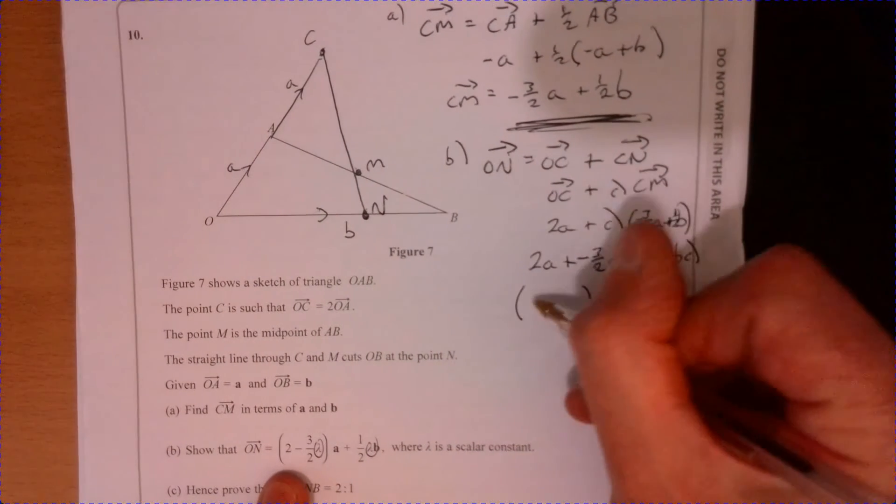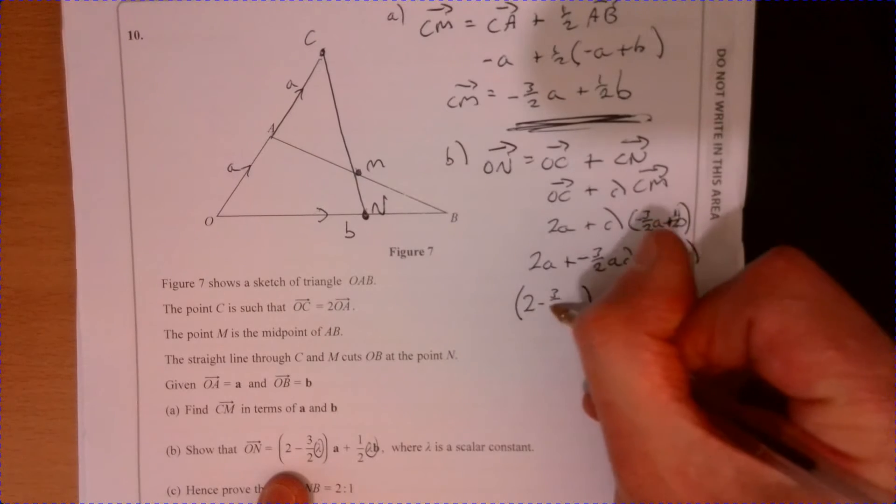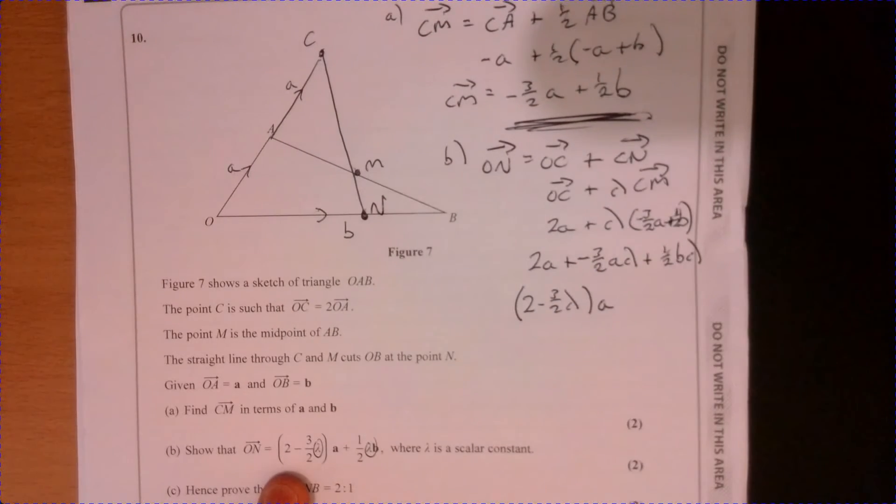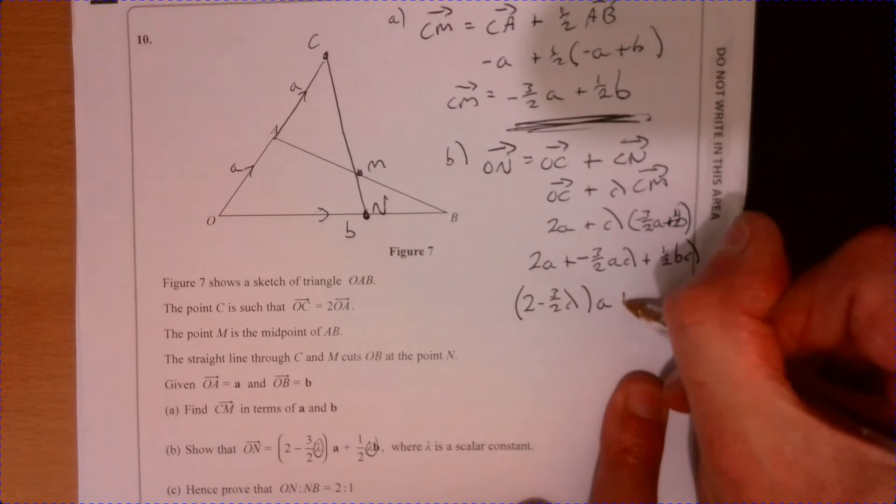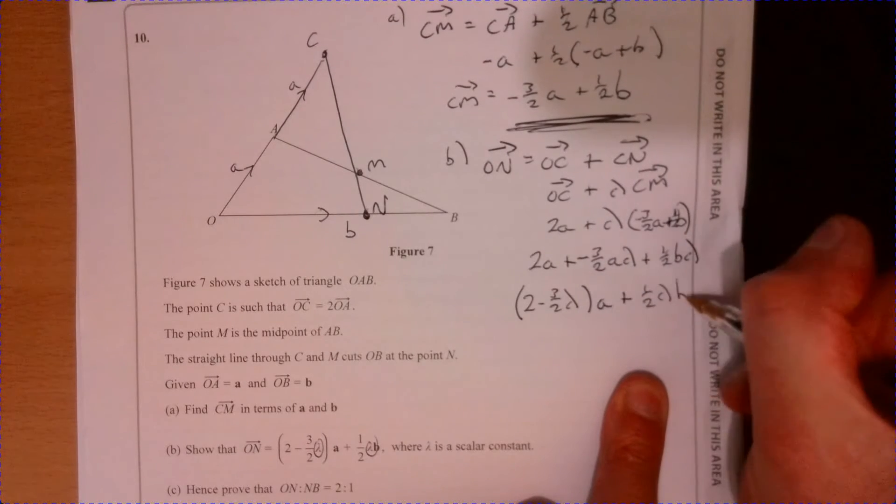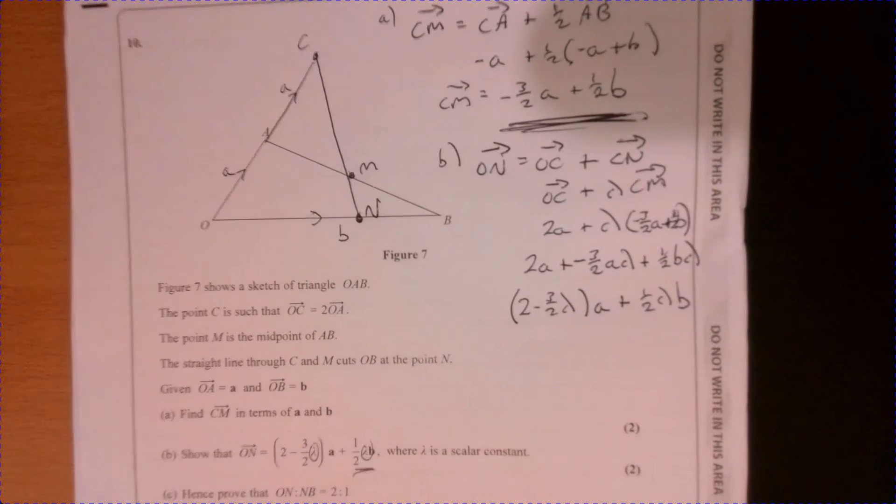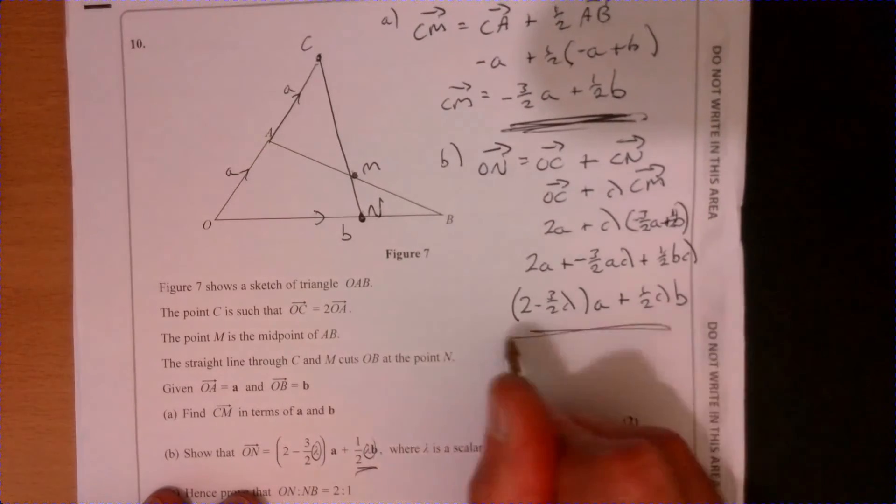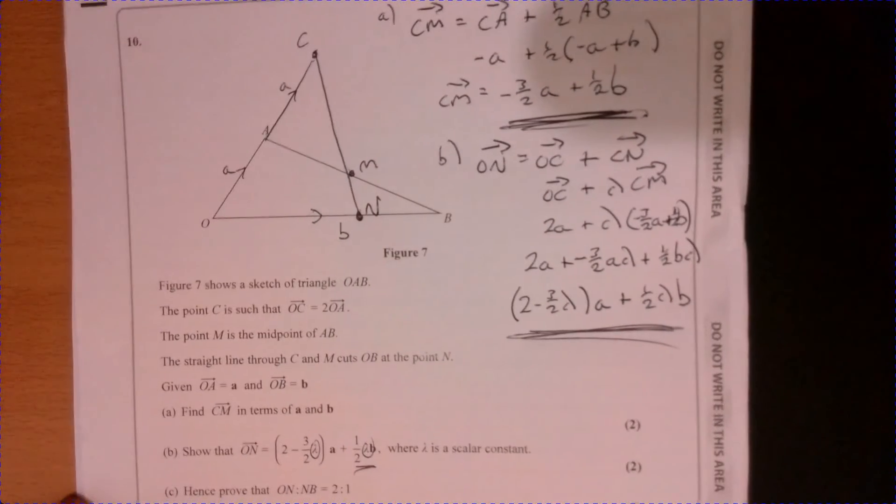They've just grouped the a's together. Let's just write it in the same format as we're actually told to. So all they've done is just taking a out as a factor, and then we've got 2 take away three over two as the scale factor, and then we've got plus half. Write it the right way round in terms of what they've asked us to do.